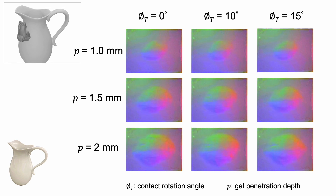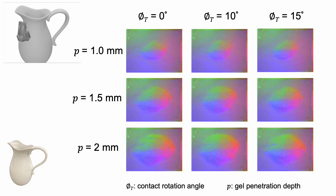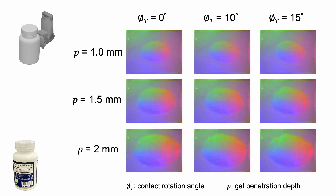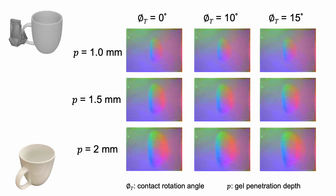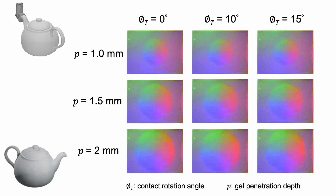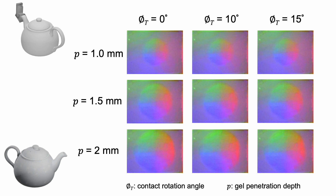Here are the results at another contact location, and the results for a medicine bottle object, a coffee mug, another location on the mug, a teapot, and another location on the teapot.